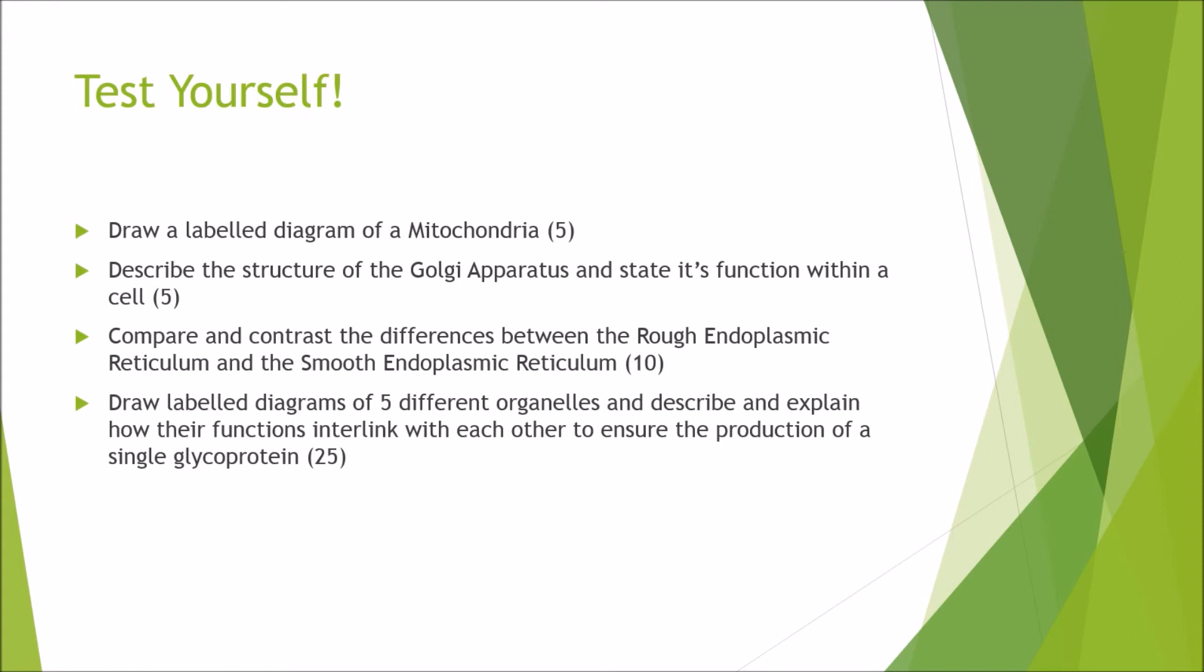Now finally we have a big test yourself section. So if you are aiming for a pass, you should basically be able to draw a labeled diagram of a mitochondria, simply enough, and it is worth 5 points. Describe the structure of the Golgi apparatus and state its function within the cell. This would be slightly higher, so 2-2 range. Again, it is worth 5 marks, so what do you think you need to include to get 5 marks. Then step up to a 2-1. Compare and contrast the differences between the rough endoplasmic reticulum and the smooth endoplasmic reticulum. This is worth 10 points. Then finally, if you are aiming for a first, it may require a bit of extra reading. Draw labeled diagrams of 5 different organelles and describe and explain how their functions interlink with each other to ensure the production of a single glycoprotein. So that is going to require you to bring out a broad spectrum of different organelles and to interlink them together.